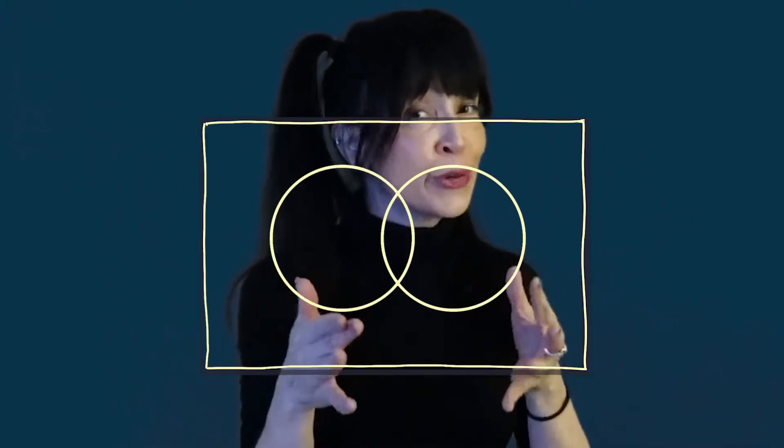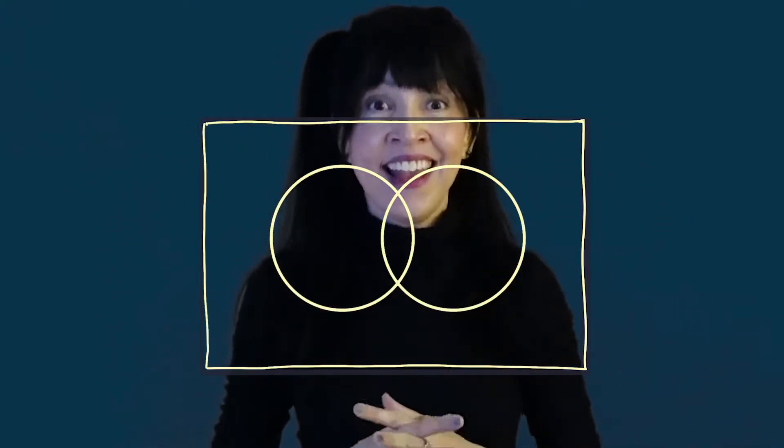Hello everybody, welcome back. In this video we're going to talk about Venn diagrams. Venn diagrams are essentially rectangles with circles inside, and they can be used for many things in mathematics. In probability they can be used specifically to derive many rules of probability without having to rely on memorization.